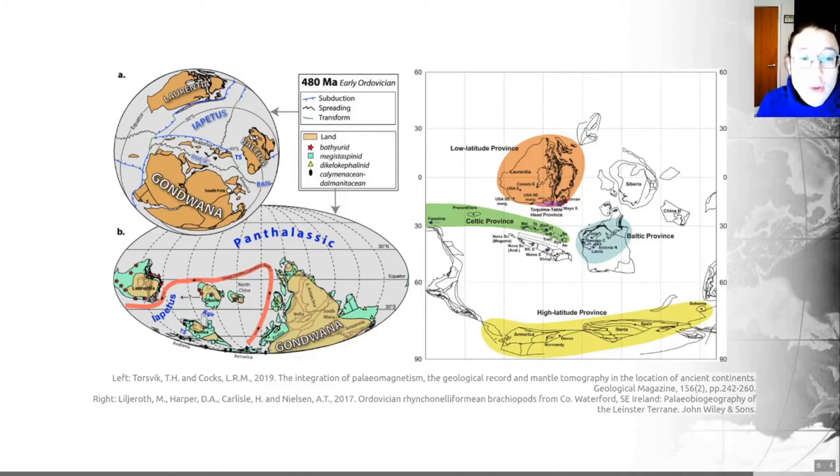Oceans in the lowest equatorial latitudes hosted two distinct and separate faunal provinces. The first is the Bathurid province. These are the red stars that are shown on this map here. Laurentia and Siberia and bits of China. And a separate Dichelocephalinid province, that one was difficult, which colonized the seas surrounding the margins of the lower latitude parts of Gondwana. So you can see those here.